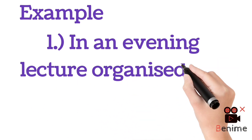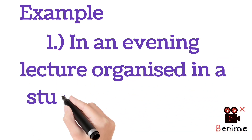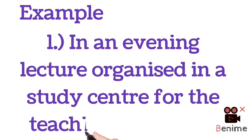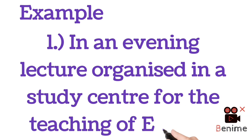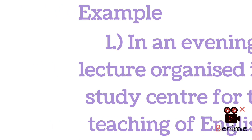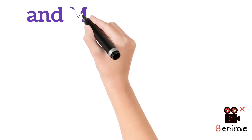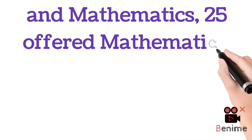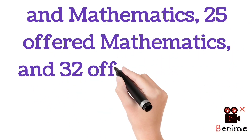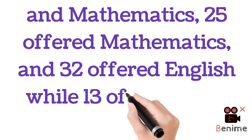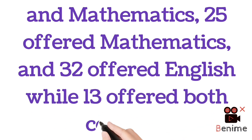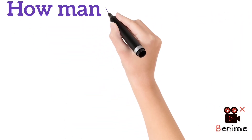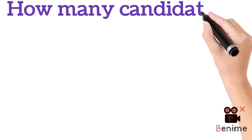The first example is this: in an evening lecture organized in a study center for the teaching of English and Mathematics, 25 offered Mathematics and 32 offered English, while 13 offered both courses.